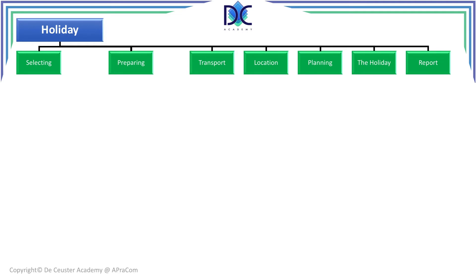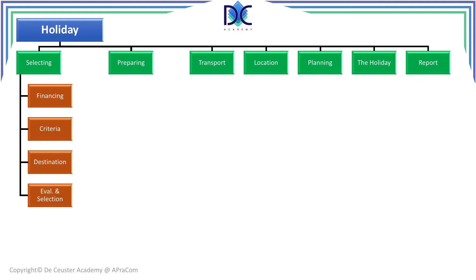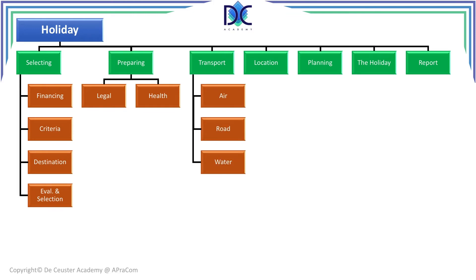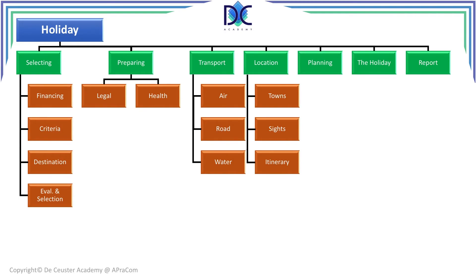For selection, we look at financing, the criteria we want to use, possible destinations, and making an evaluation and selection. For preparation, we consider legal issues and health issues. For transport, we may look at air, road, or water transportation. For location, we consider different towns, sites we want to see, and the itinerary.